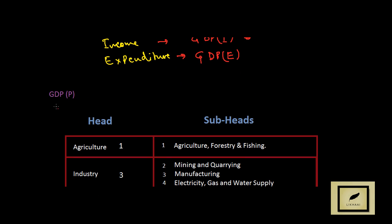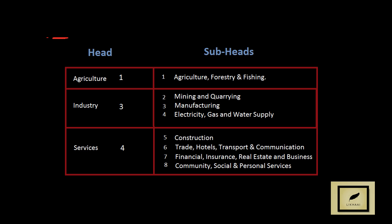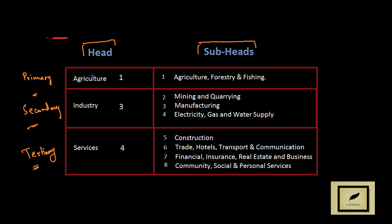Now let's see how GDP-Product is calculated. The CSO divides the economy into three heads depending on the three main sectors: the primary sector, the secondary sector, and the tertiary sector. This gives three heads and eight sub-heads — agriculture as the primary head, industry based on the secondary sector, and services based on the tertiary sector. In agriculture we have one sub-head, industry three sub-heads, and services four sub-heads, covering agriculture, forestry and fishing, mining and quarrying, manufacturing, electricity, gas and water supply, construction, trade, hotels, transport, and so on.